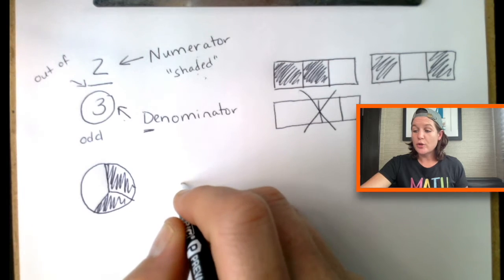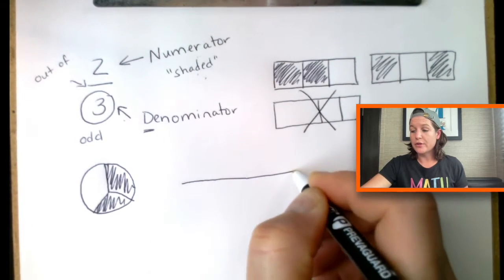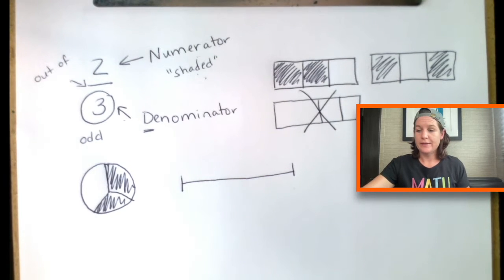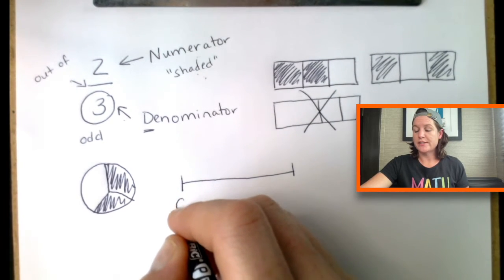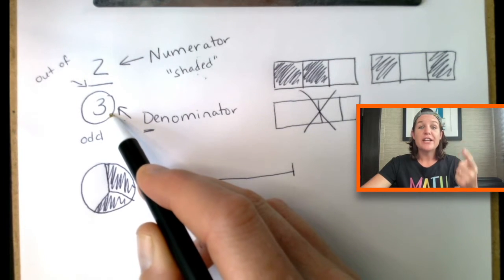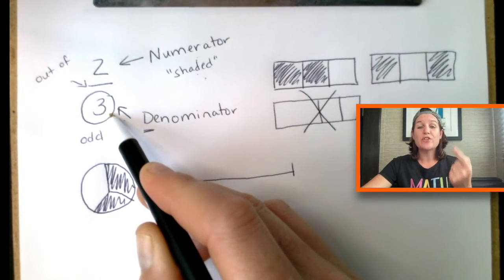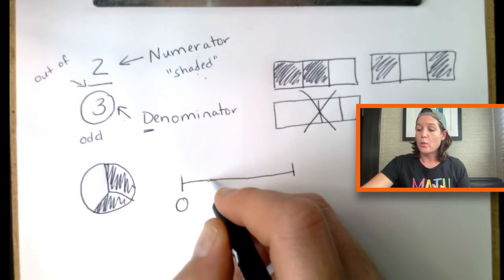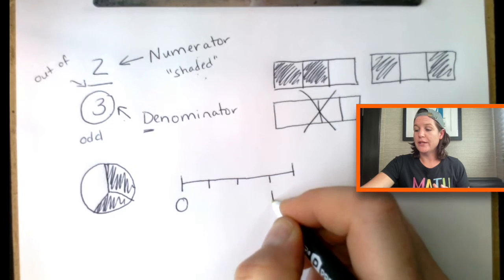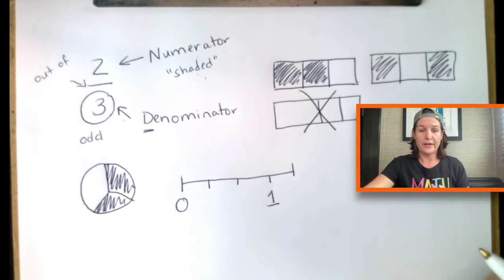Another typical way to model in third grade would be using a number line. And that's where we would start at zero. To model using a number line, we have three equal parts or three total jumps. So, starting from the zero, go one, two, three. That would be one whole right there.